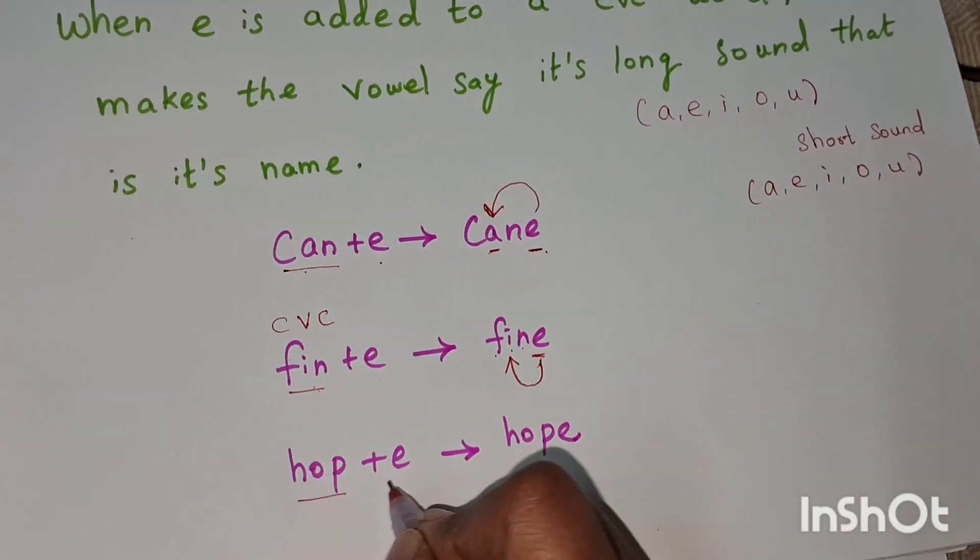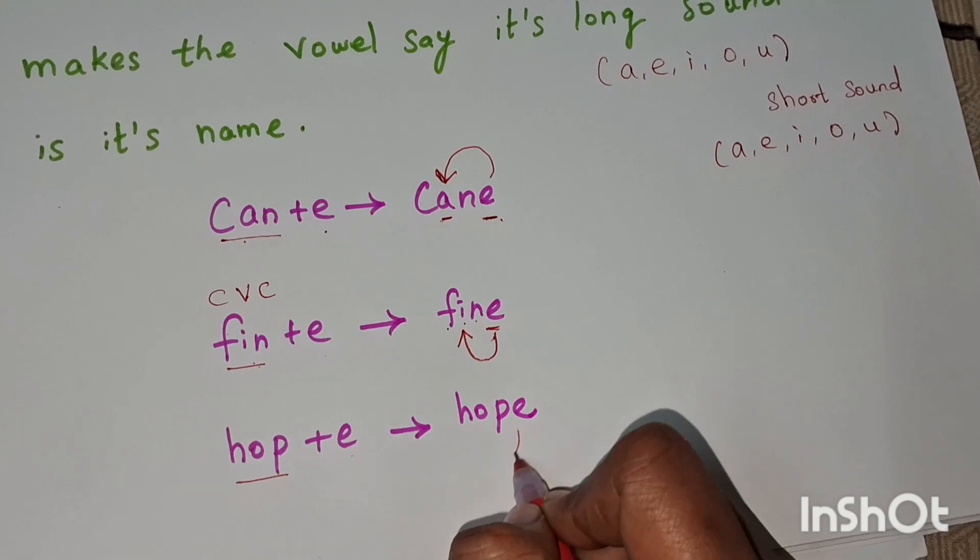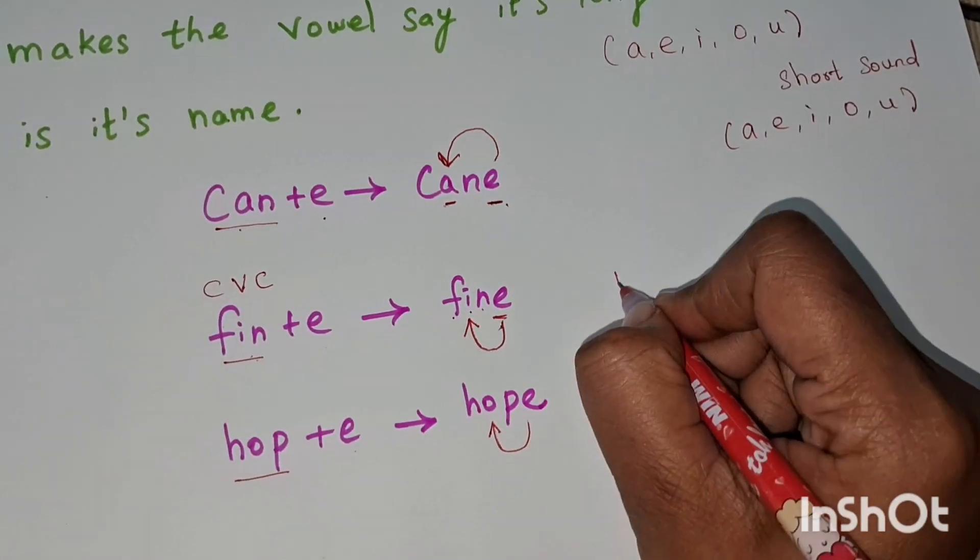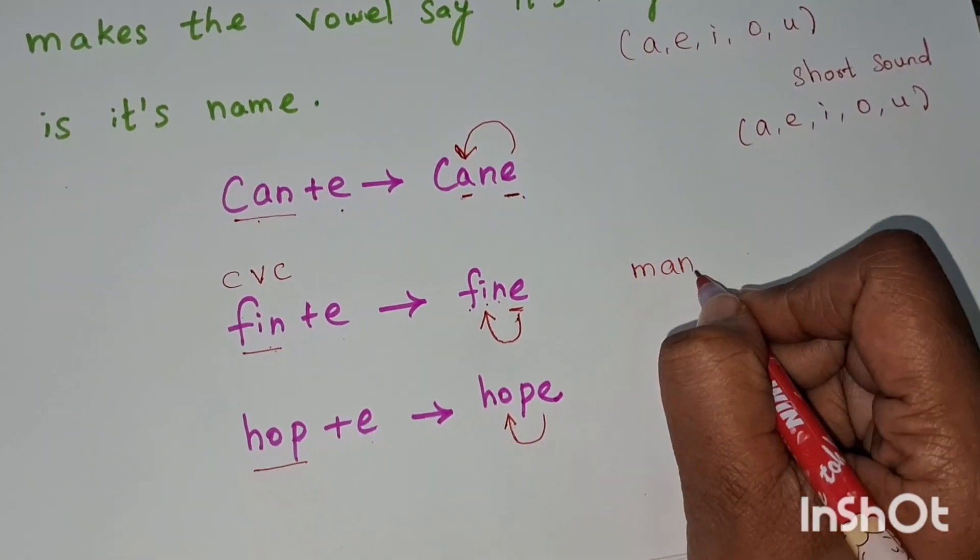This is hop. When you add e, it becomes H-O-P-E, hope. Next, let's look at man: M-A-N, man.